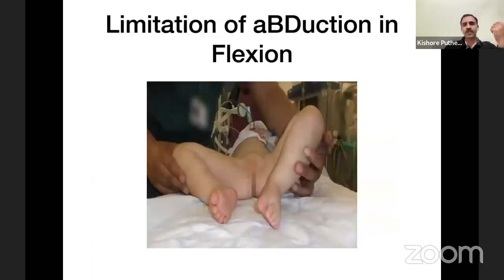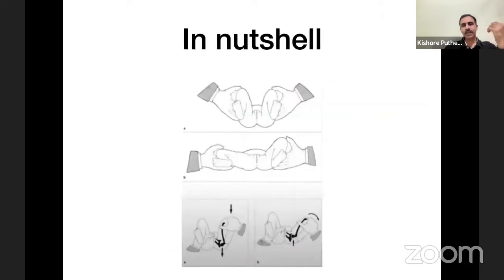There is limitation of abduction in the affected side, which is another clinical sign suggestive of DDH. In nutshell: look for limitation of abduction in flexion, do the Ortolani test, and do the Barlow test — this constitutes the focused hip examination.